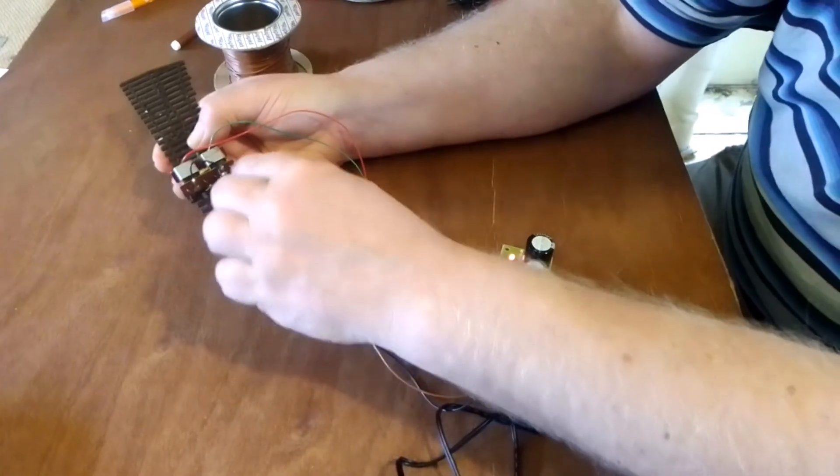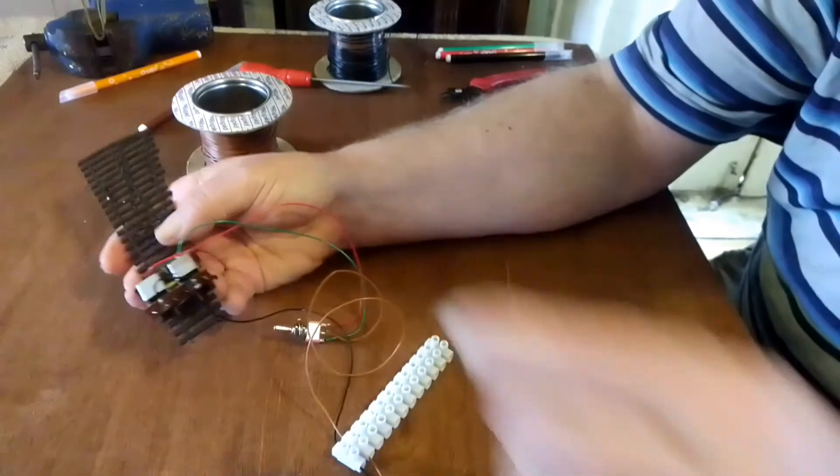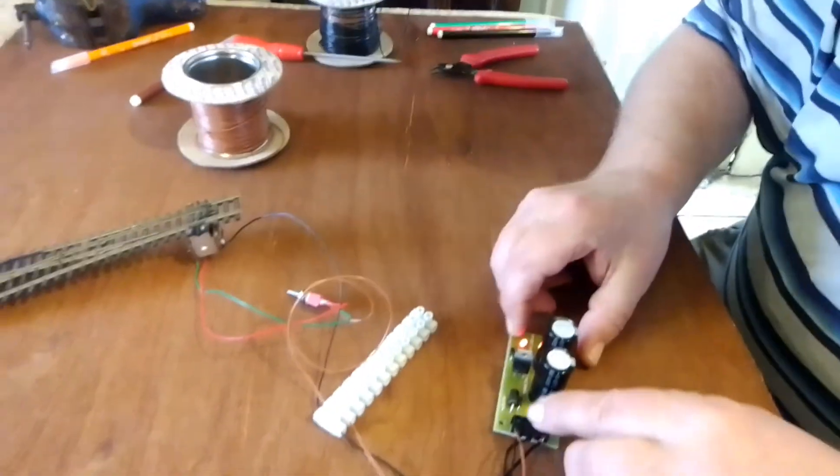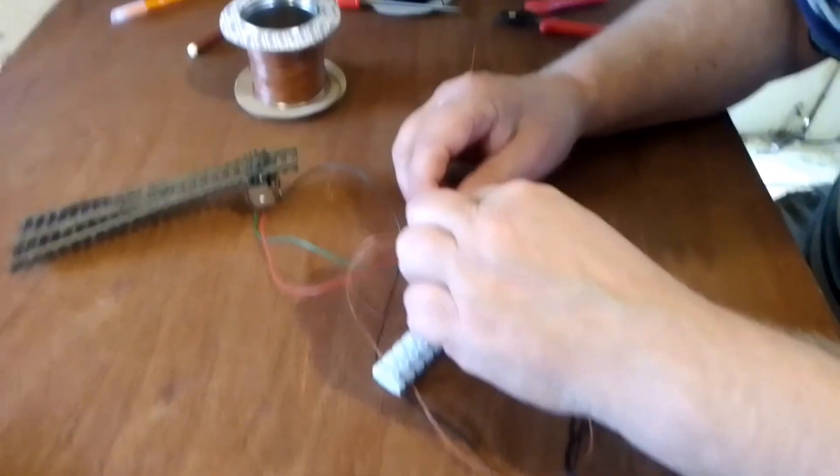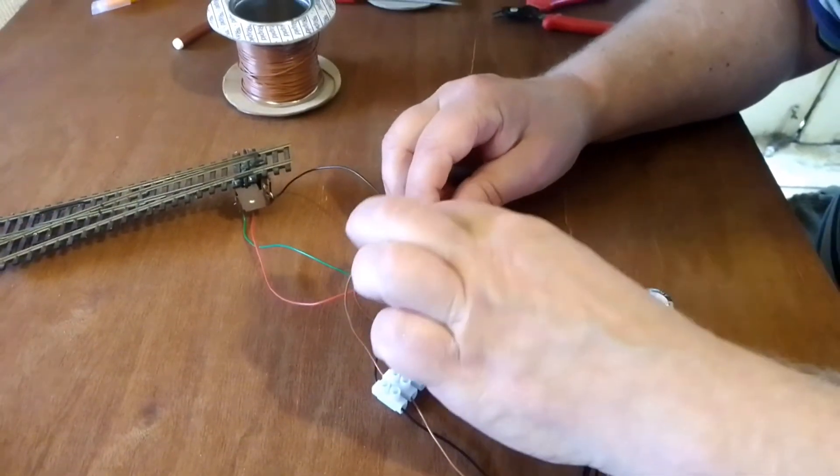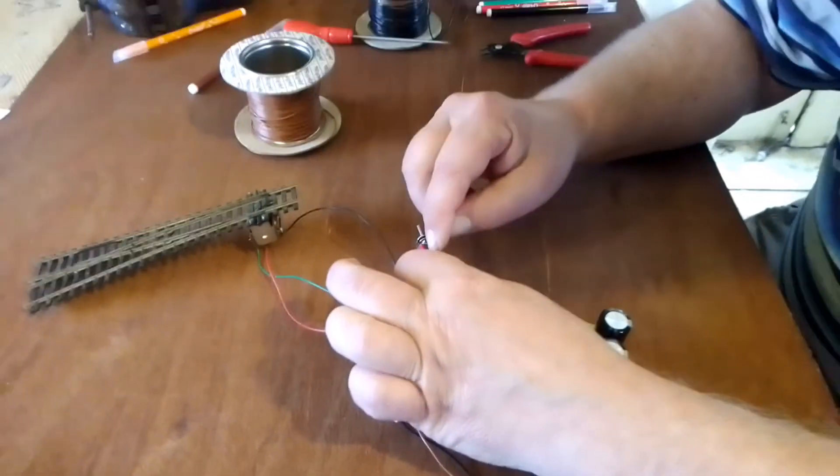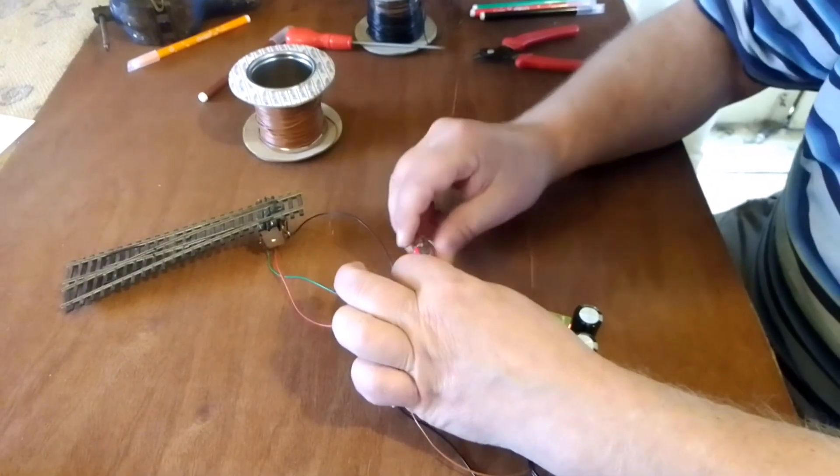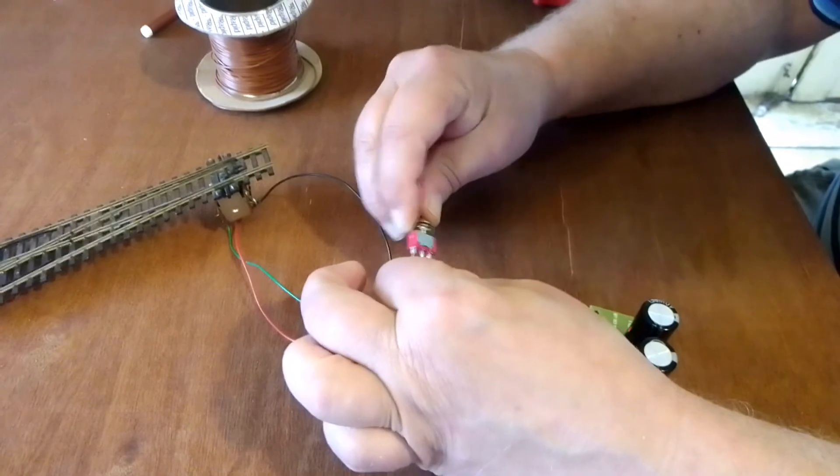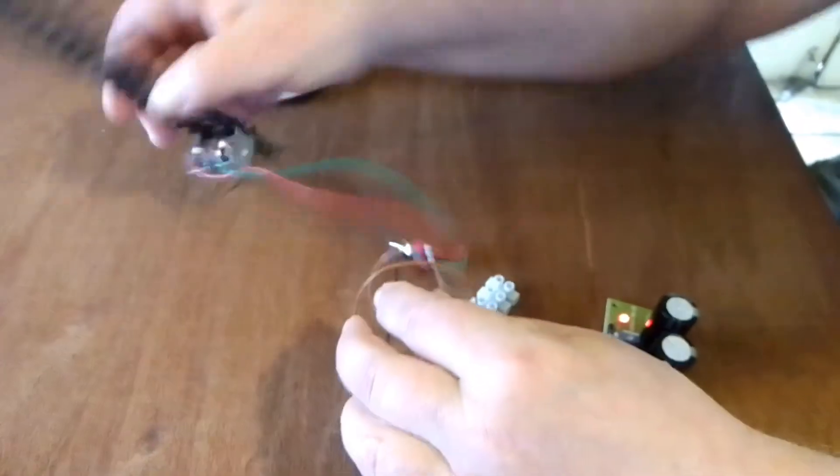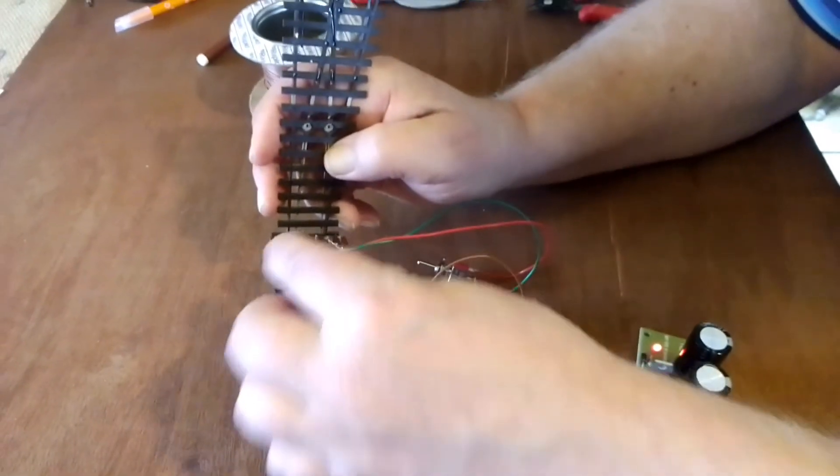We've got the out plus runs along to the middle terminal on this switch. And when you operate the switch that's going to connect that way to the red wire, that way to the green wire. The red and green wire go to the other ends of the two coils.